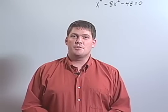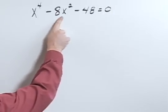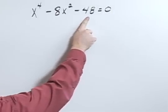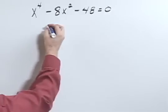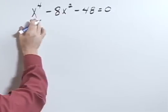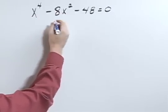Solve the equation using a u-substitution. x to the fourth minus 8x squared minus 48 equals zero. What we want to do is just rewrite this so that it's not to the fourth power but a quadratic, something that we're more used to.